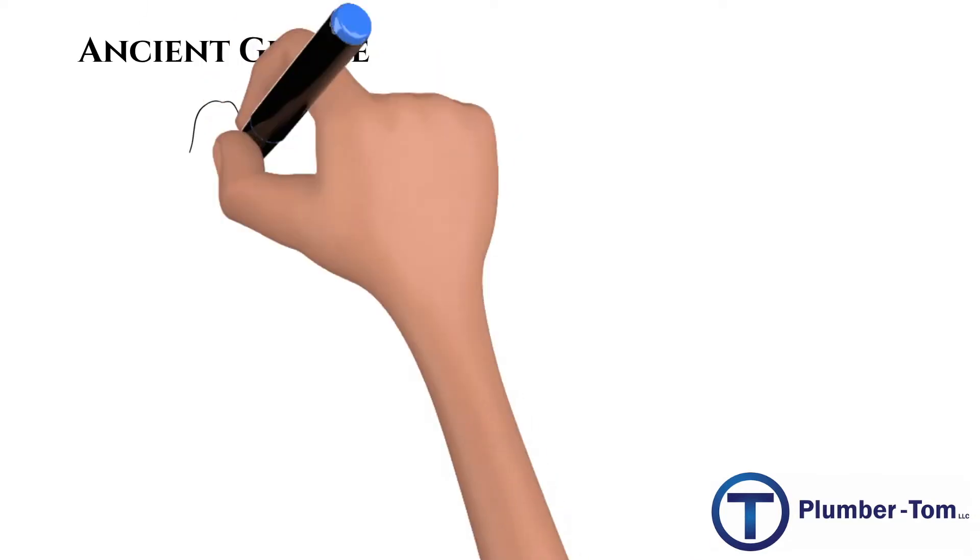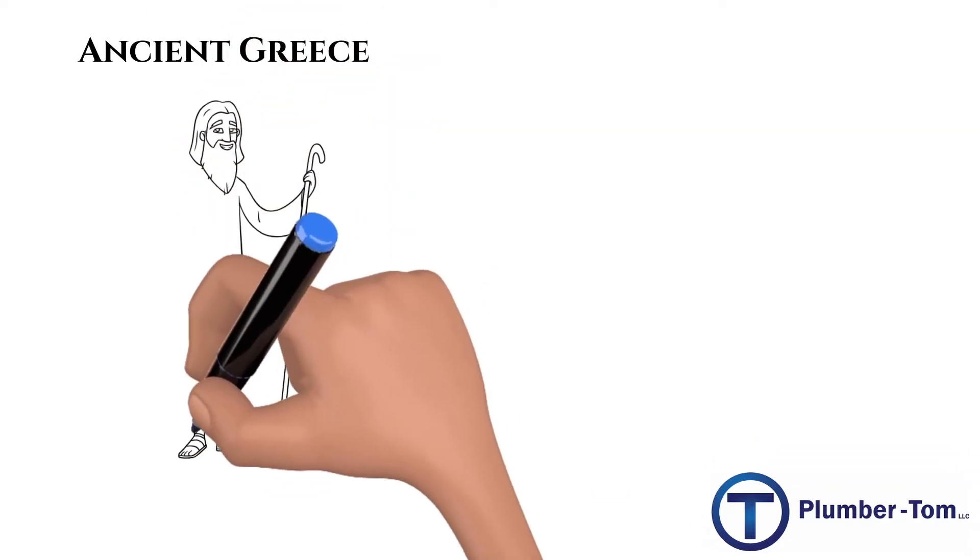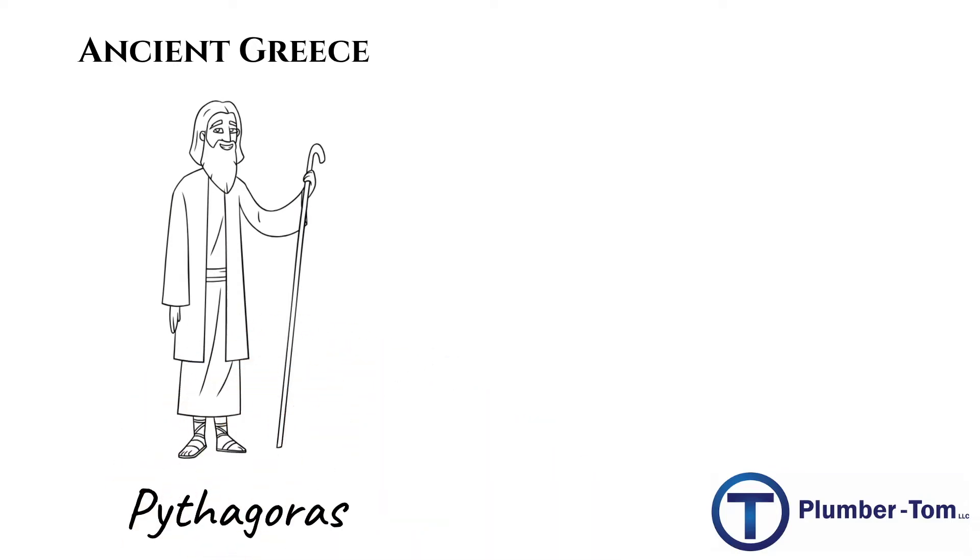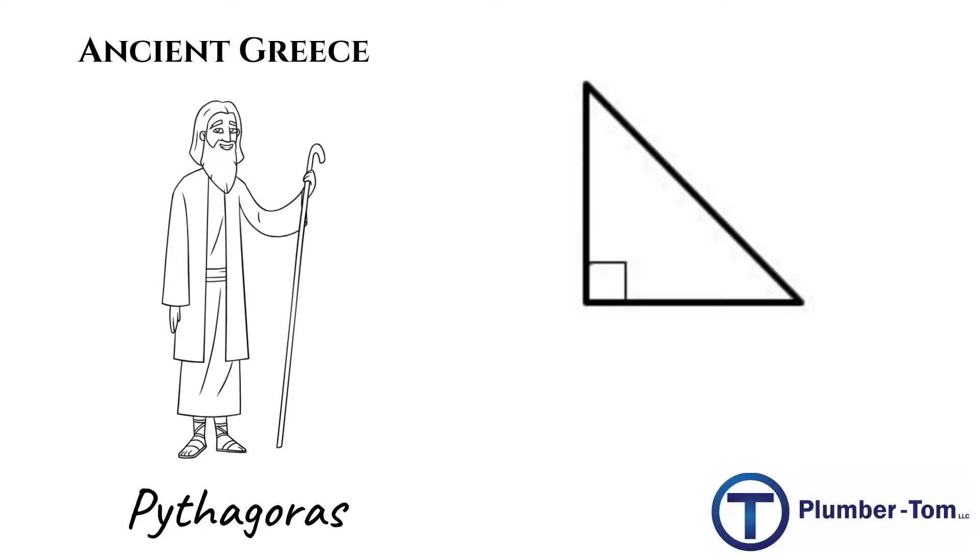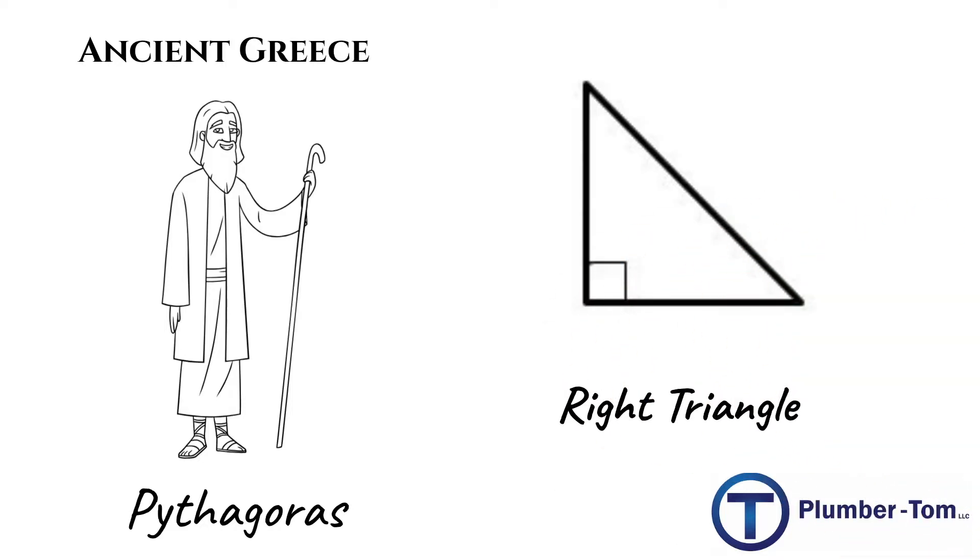To find the origins of 1.414 we must go back in time to ancient Greece where a man by the name of Pythagoras lived and apparently he had a lot of time to think about triangles.